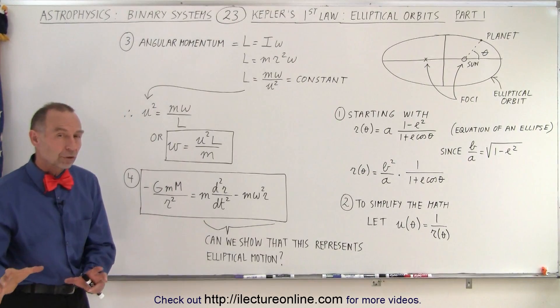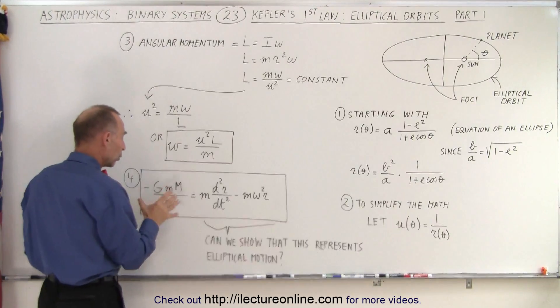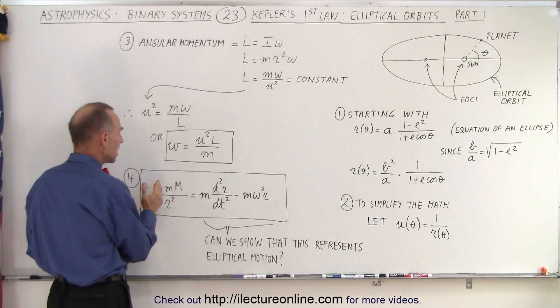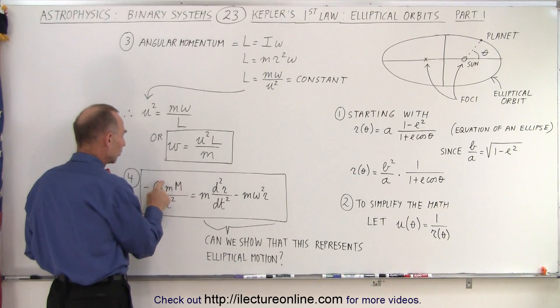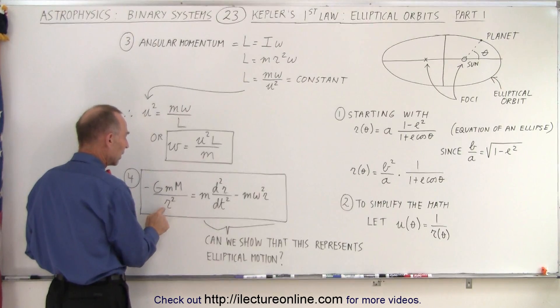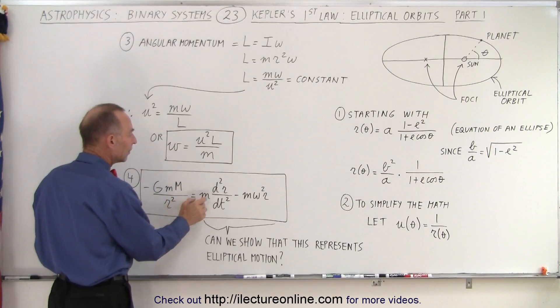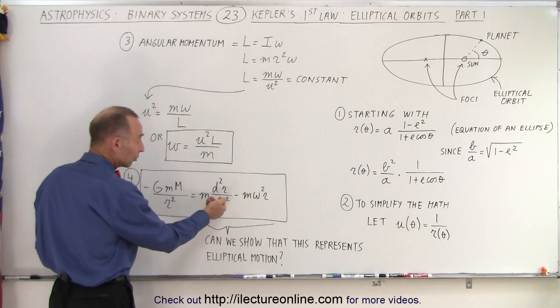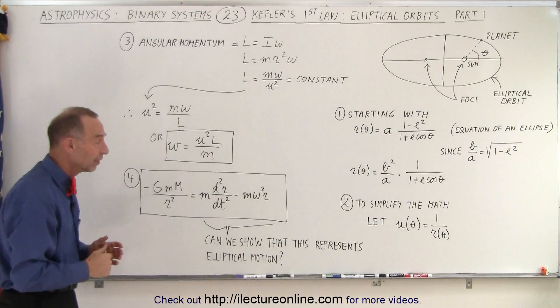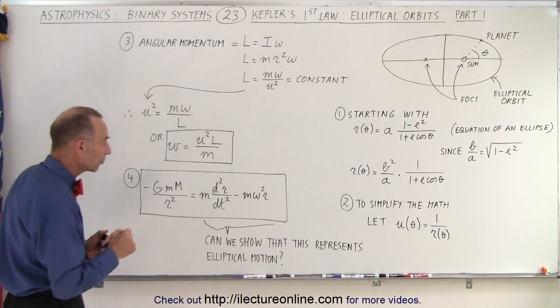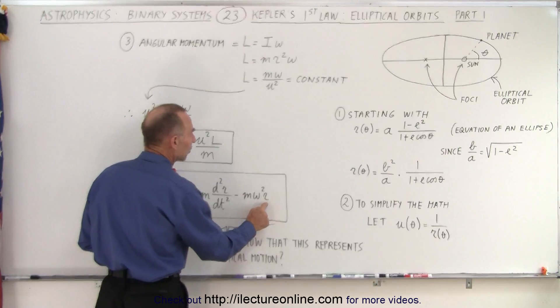Now we talk about Newton's equation of gravity, where G M big M over R squared—G is the universal gravitational constant, big M is the mass of the sun, and R is the radius—equals M times A, the acceleration. This can be written as the second derivative of the radial distance minus M omega squared R.